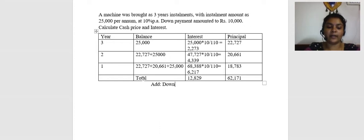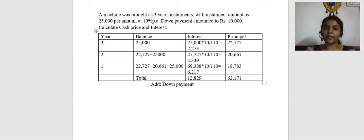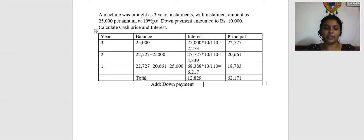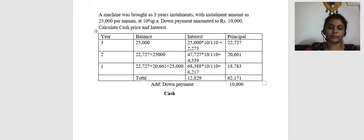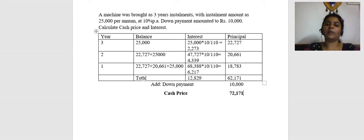Add the down payment, because to the extent of the down payment made, no interest would have been charged — you pay the entire down payment on day one. However, it is also a consideration paid. So add down payment of 10,000, which gives a total cash price of 72,171.